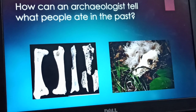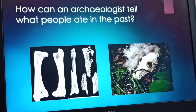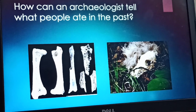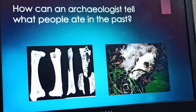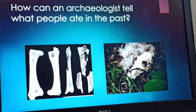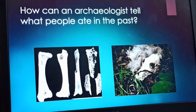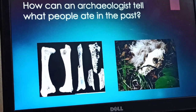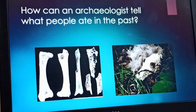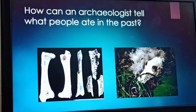How can archaeologists tell what people ate in the past? Here you can see two pictures — they are bones and skeletons. Archaeologists can tell what people might have eaten in the past by the remains of bones of animals, birds, or fish. By doing research on the bones and identifying which animal they came from, they can decide what people might have eaten.